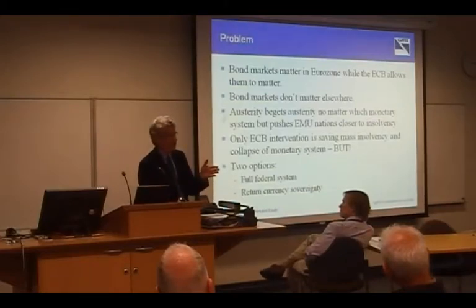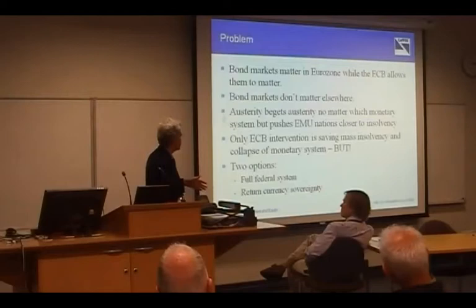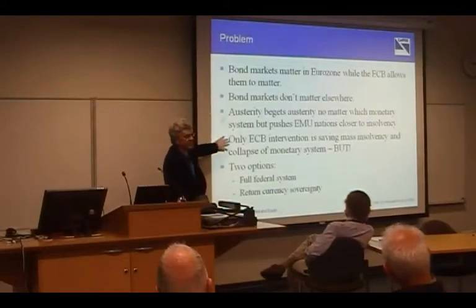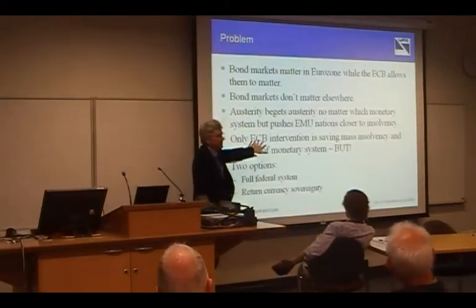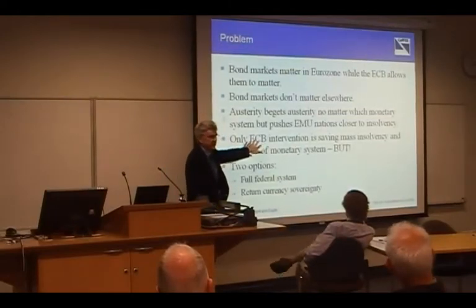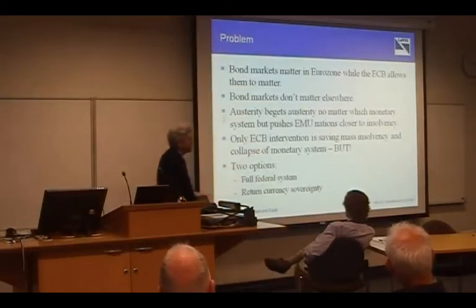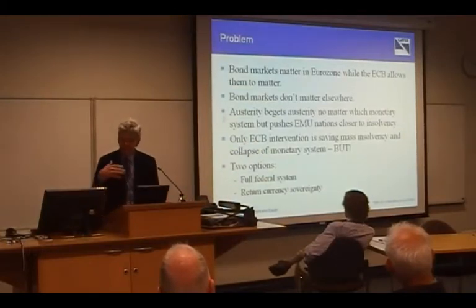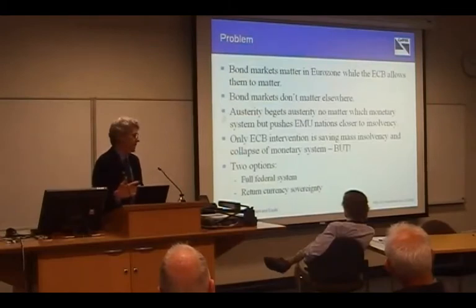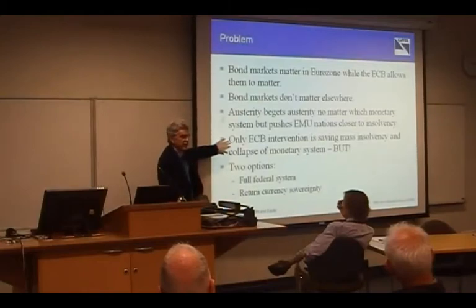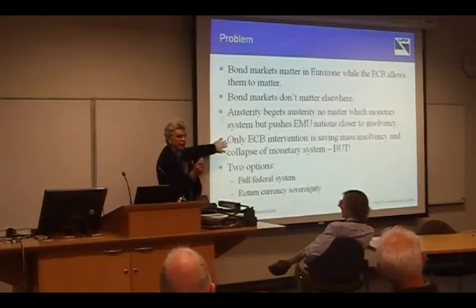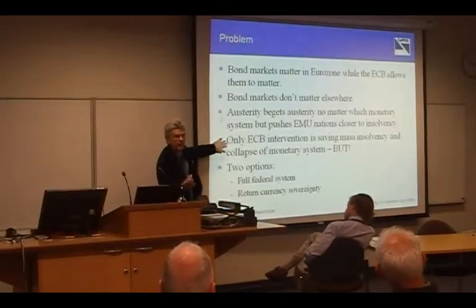The only reason the European system hasn't collapsed into insolvency is because the European Central Bank is intervening. That's a fact, and it should be a guide to the way to reform the system. But the cost of this intervention is the enforced austerity. The ECB should be saying to governments: run higher deficits, grow your economies, get some stability into your system, and you'll fund the whole lot.